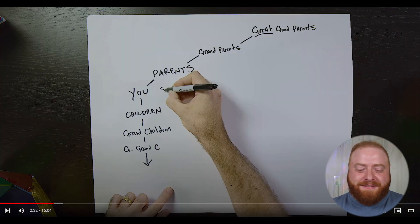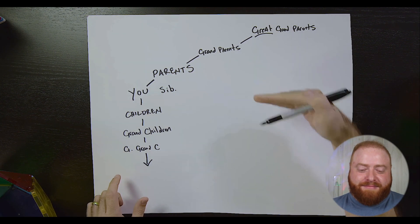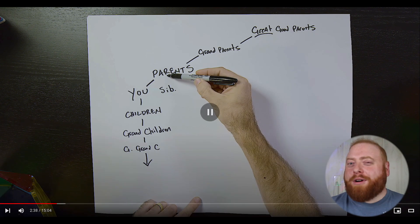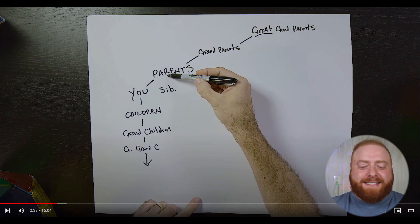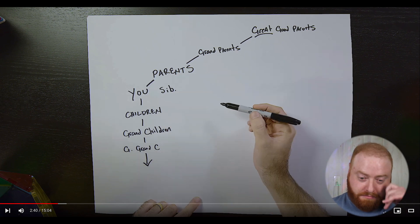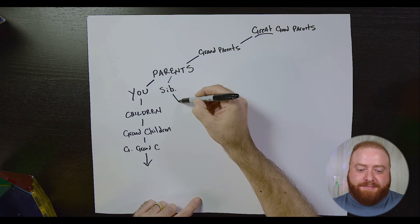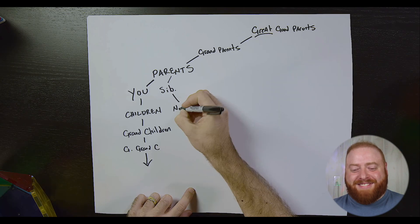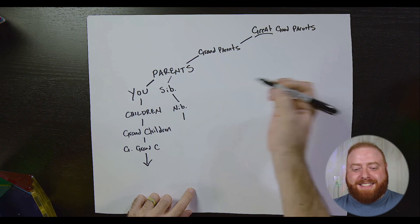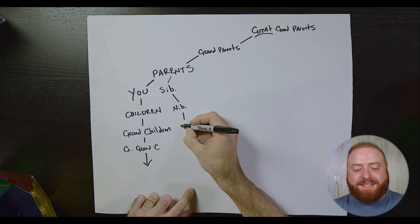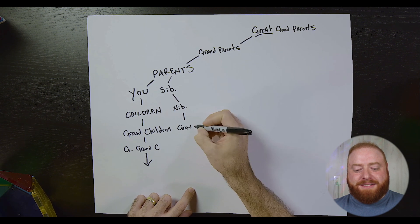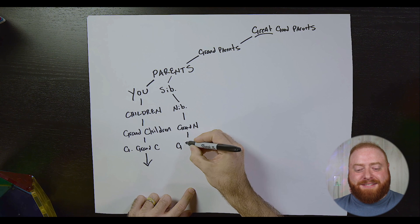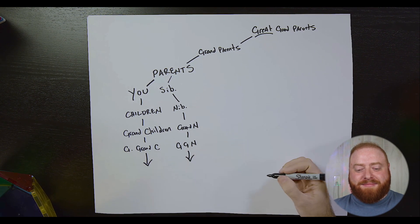Parents can have children that are not you — they're called your siblings. They are on the same row as you because you're in the same generation. Your siblings descend directly from your parents, just as did you. Your siblings can have kids, and those kids are your nieces and nephews. CGP Grey has a great name for these — rather than calling them nieces and nephews, let's just call them nibblings. Their kids will be called your grand-nibblings, then your great-grand-nibblings, and so on.